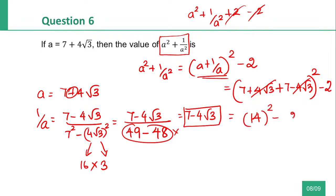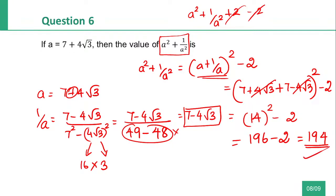14 square minus 2. 14 square will be 196. So 196 minus 2, that is 194. The answer is 194 is the right answer.